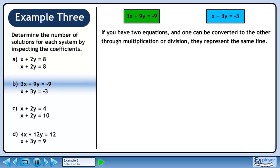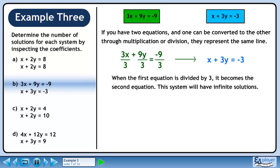If you have two equations, and one can be converted into the other through multiplication or division, they represent the same line. When the first equation is divided by 3, it becomes the second equation. This system will have infinite solutions.